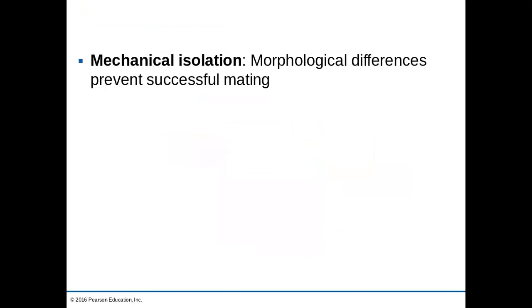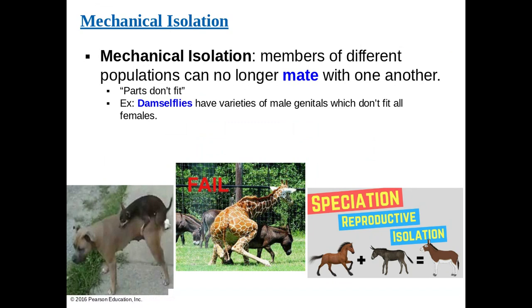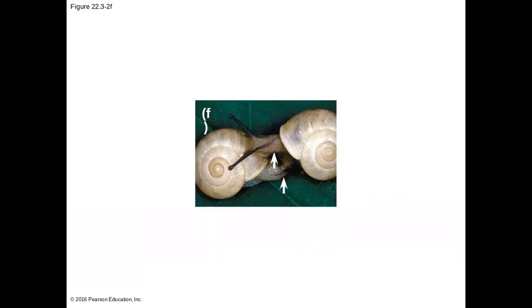Mechanical isolation results when morphological differences prevent successful mating — the parts don't fit. This occurs when animals cannot mate because the genitals don't fit into the right place. For example, different species of damselfly have males with different genital shapes that don't fit into other females, so they can only mate with their own species. Similarly, snails have a lot of mechanical isolation because their shells go in different directions — if the shells don't align, they crash into each other and cannot have intercourse.